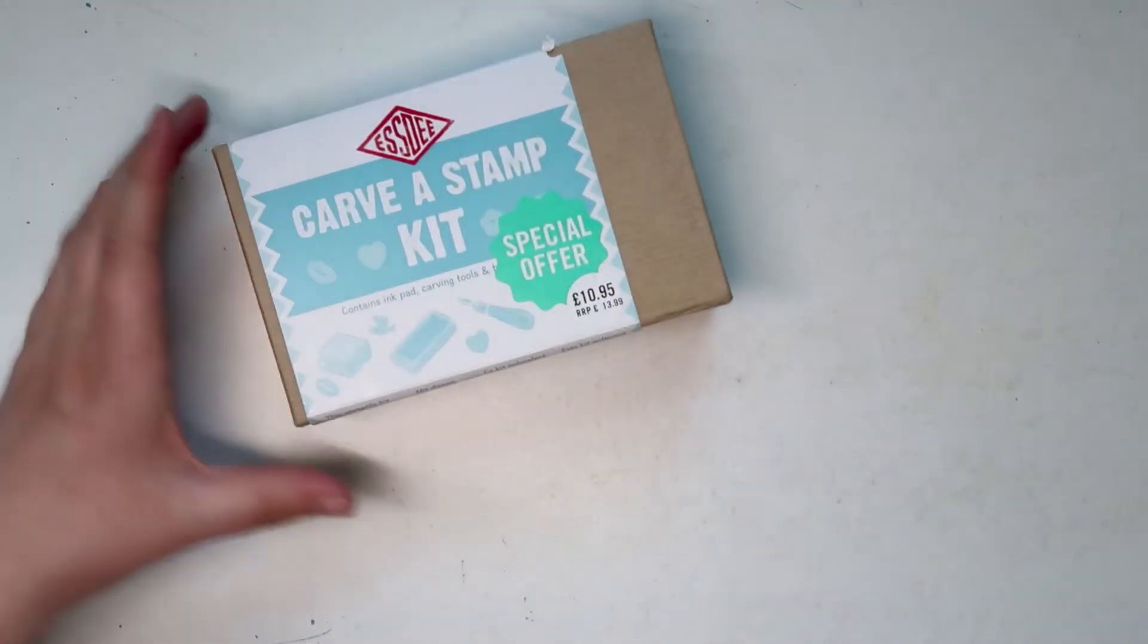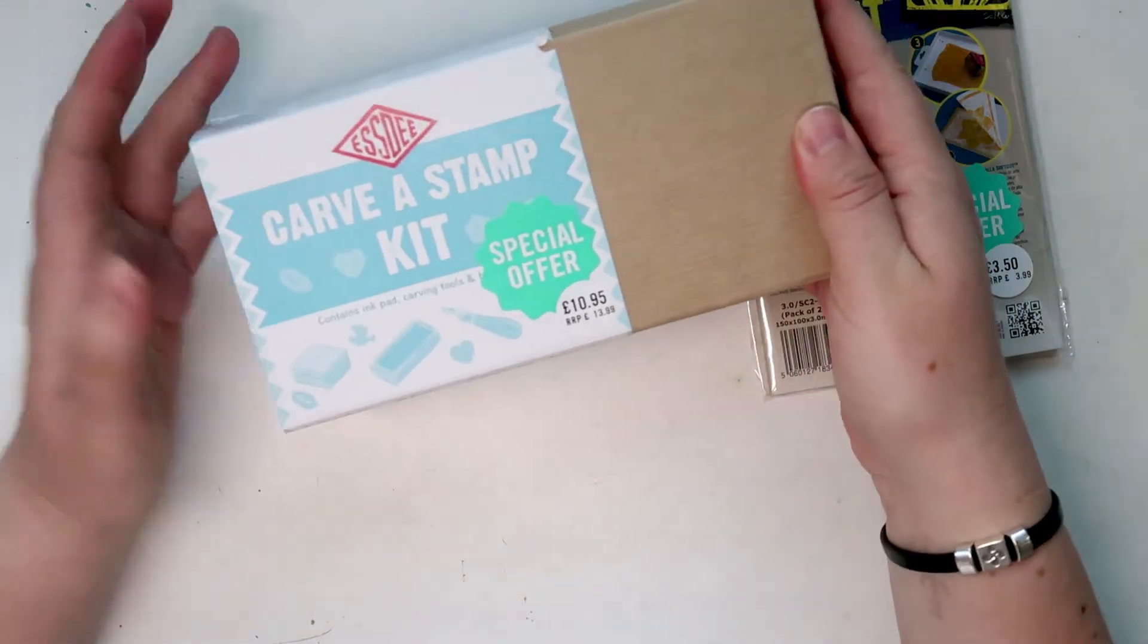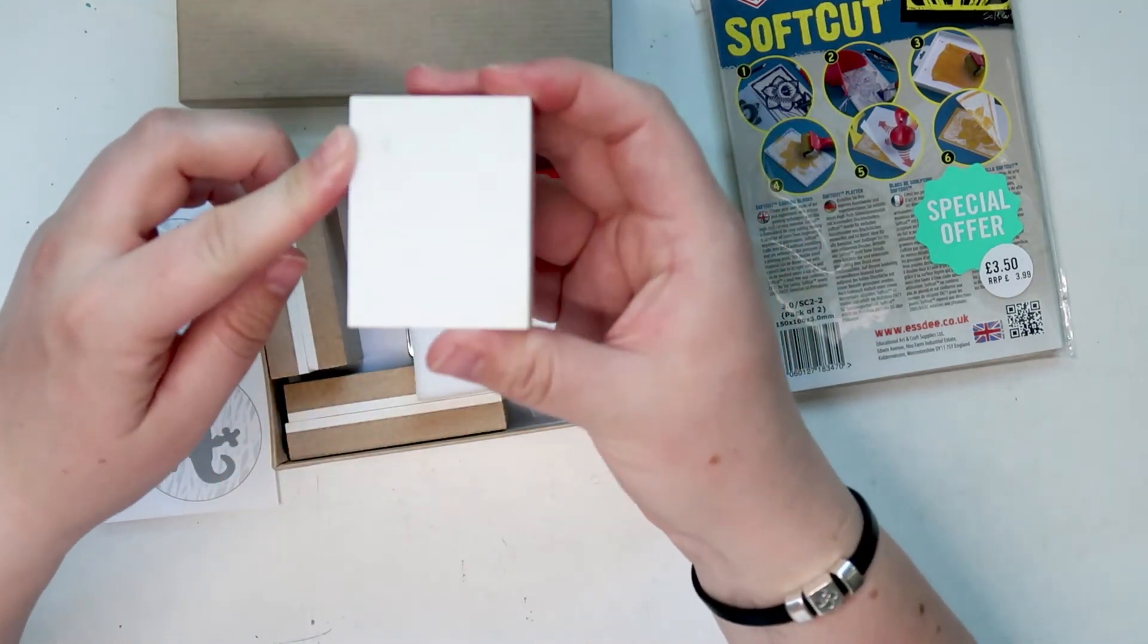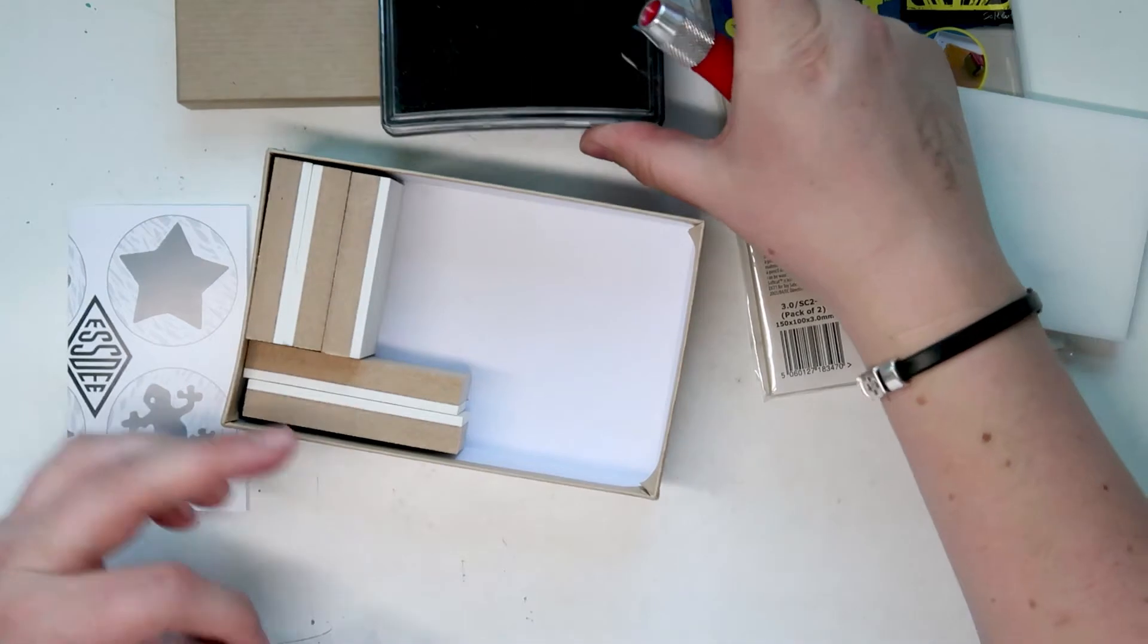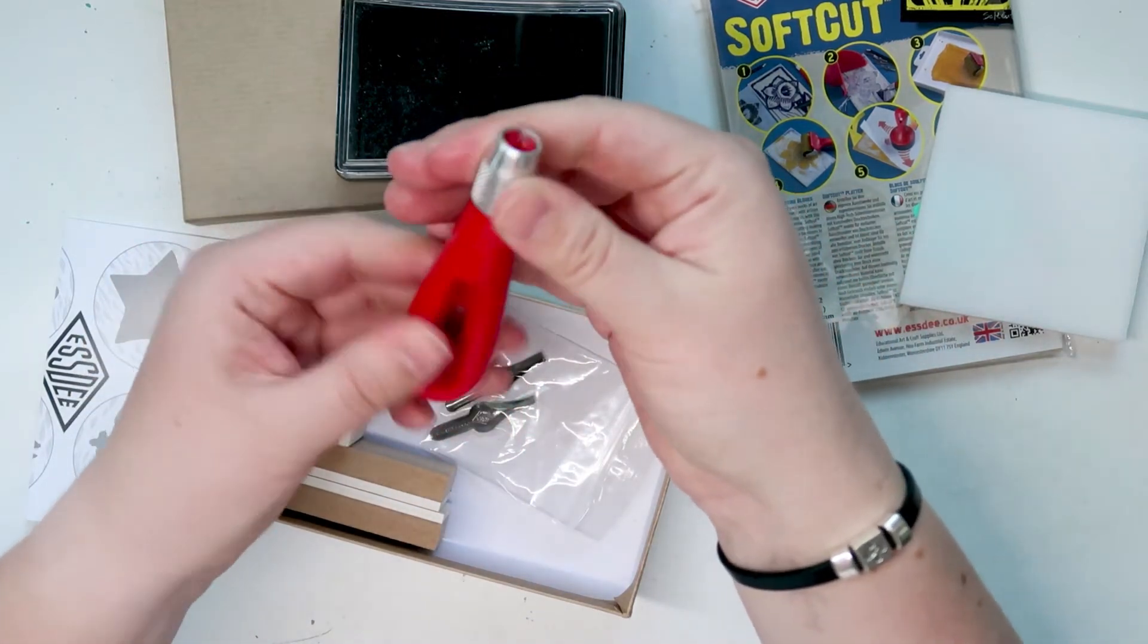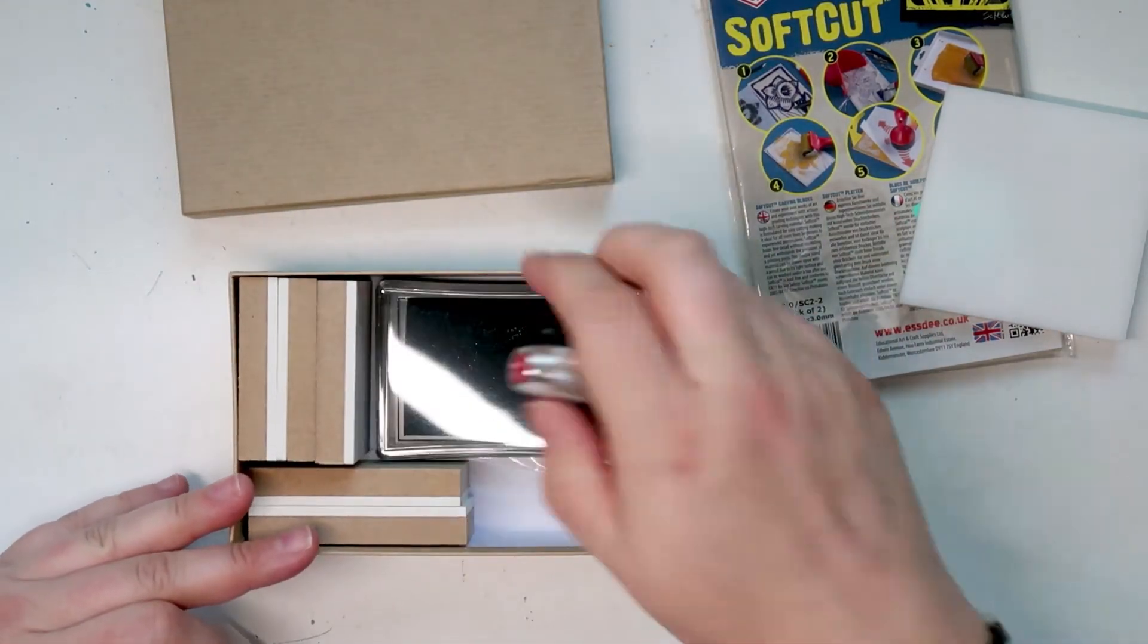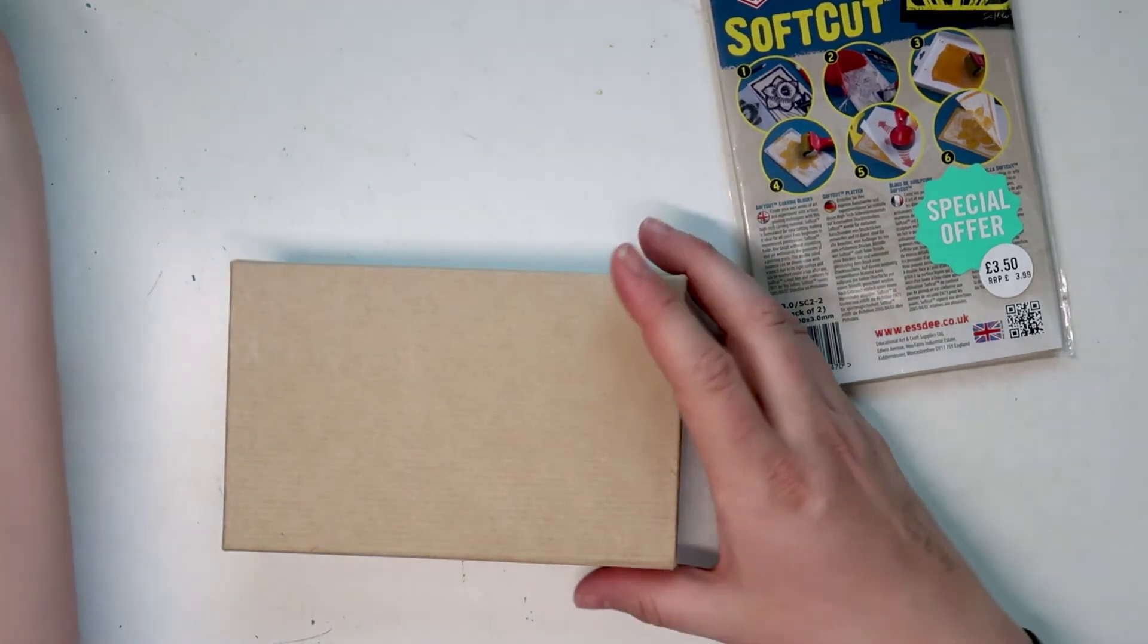And then I also got this carve a stamp set from Cass Arts and an extra couple of lino blocks. This set is really awesome. I got it from Cass Arts but I think you can also get it online, I've seen it on Amazon I think. So it comes with a whole bunch of different blocks, I think there's five that you can make your stamps out of. It comes with a little ink pad so you can ink your stamps, and then also comes with two blades, so a thicker blade and a thinner blade, which I guess go into here. So I'm really looking forward to using that because I wanted to try stamp making for a long time. I used to do wood carving and lino carving when I was a kid in school and I loved it so much, apart from when I would cut my fingers or my hands. So I'm trying not to do that as an adult, but I can't promise anything.